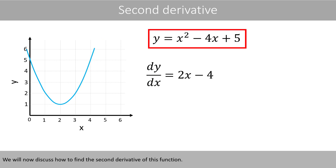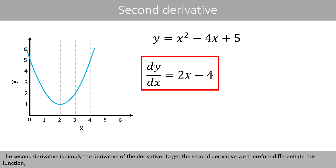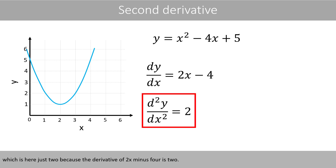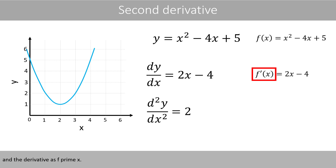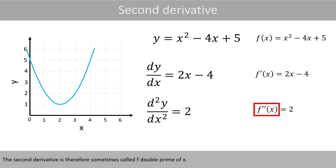We will now discuss how to find the second derivative of this function. The second derivative is simply the derivative of the derivative. To get the second derivative, we therefore differentiate this function, which is here just 2, because the derivative of 2x minus 4 is 2. Remember that the left-hand side is also sometimes denoted as f of x, and the derivative as f prime of x. The second derivative is therefore sometimes called f double prime of x.